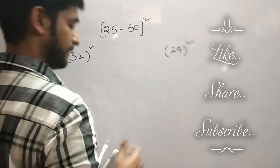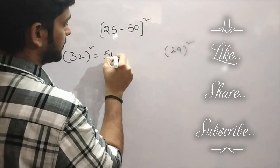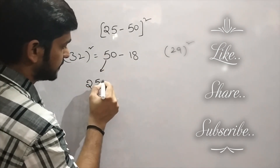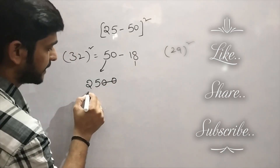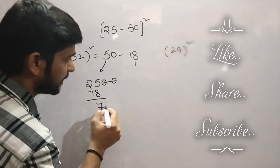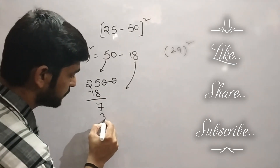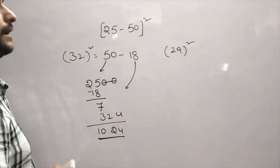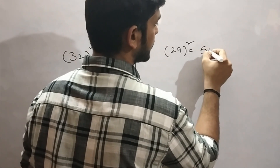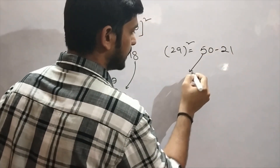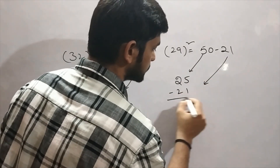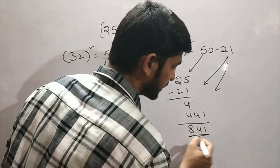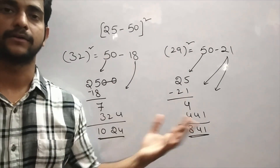Let's consider the numbers 32 and 29. 32 we can write it as 50 minus 18. We know that 50 squared will be 2500 — neglecting the last 2 digits and subtracting 18 from 25, there you will get 7. And 18 squared is 324. So the answer for 32 squared is 1024. Next, 29 squared. 29 we can write it as 50 minus 21. Subtracting 21 from 25, here I am getting 4. 21 squared will be 441. So 29 squared will be 841.